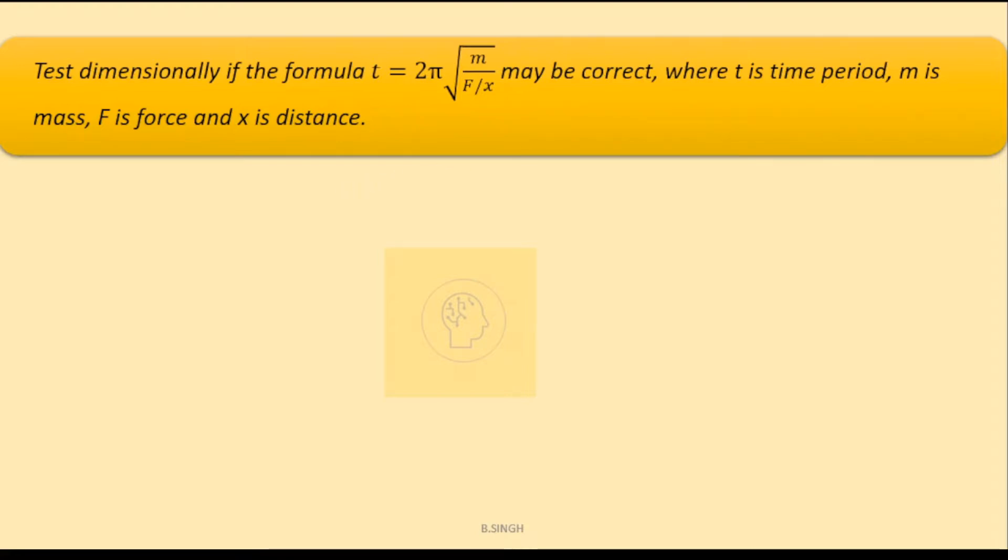So first let's write the dimensions of each physical quantity over here. So mass m has dimensions of m1, l0, t0.